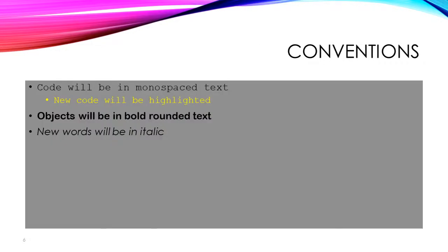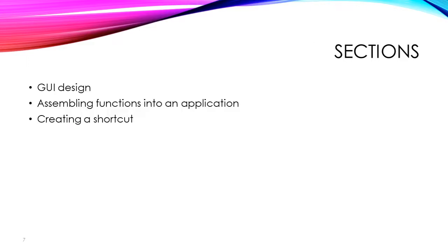Let's cover some conventions that will be used in these slides. Code will be in monospaced text — it will look like typewriter text. Any new code on the screen will be highlighted in yellow. Objects will be in bold, rounded text. Any new words that we introduce will be in italics. For this slideshow, we're going to look at GUI design, then see how to assemble the functions into an application, and finally, for Windows users, show you how to create a shortcut to access your application.